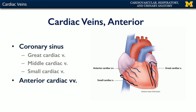Most importantly from this view, we can see the anterior cardiac veins. There are typically three to five anterior cardiac veins draining the superficial aspect of the right ventricle. They run obliquely across the heart, hop over the right coronary artery, and feed directly into the right atrium.